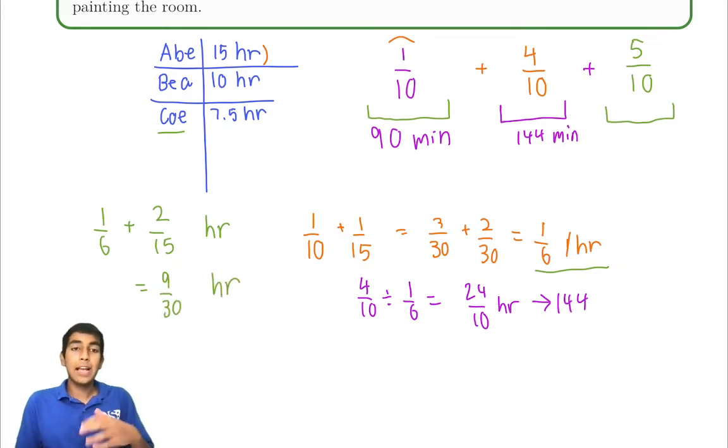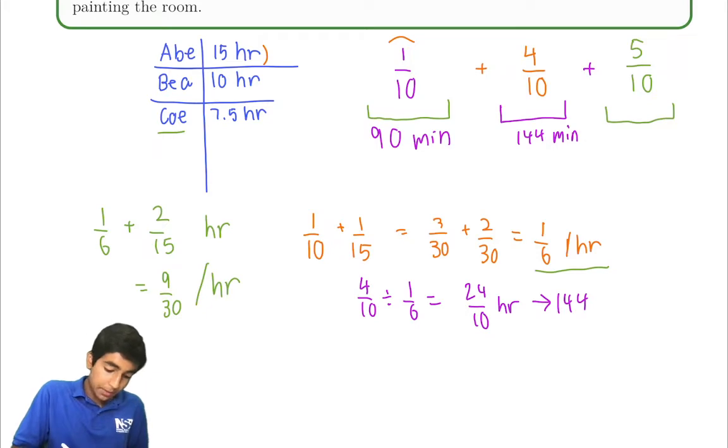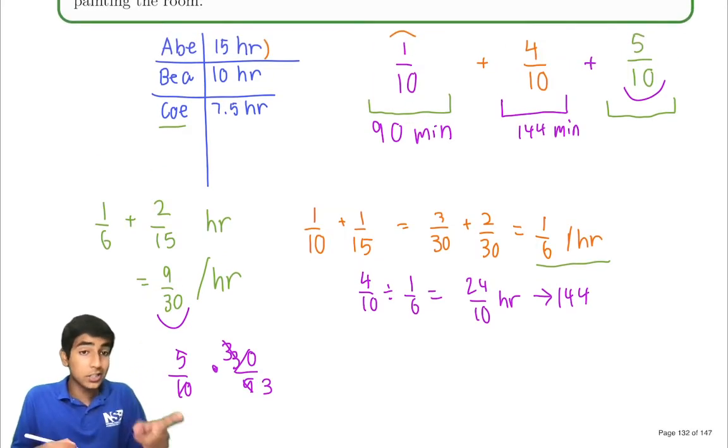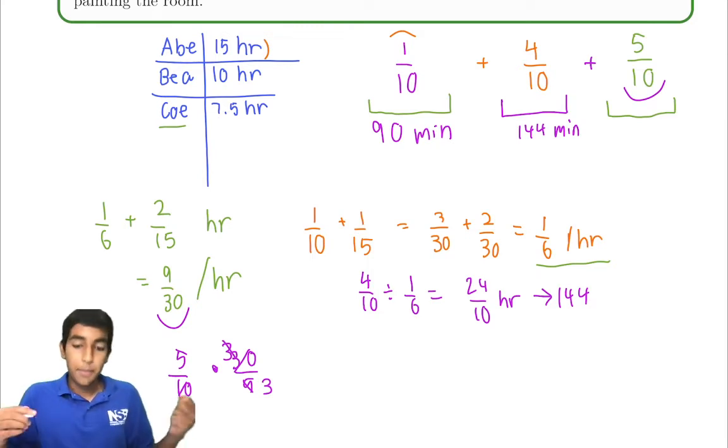Now they have to paint 5 tenths of the room, not 9 thirtieths. This is 9 thirtieths per hour, not hours. So per hour, if all three of them can paint 9 thirtieths of the room, but they have to paint 5 tenths of the room, how many hours will that take? 5 tenths divided by 9 over 30, or we can just do times 30 over 9 instead. We cancel terms out. We get 5 thirds hours—careful with the units here—which is 100 minutes.